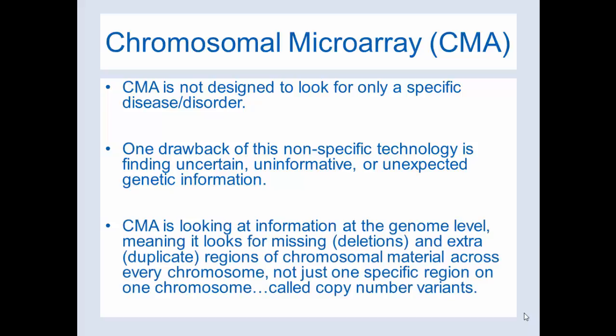CMA is looking at information at the genome level, meaning it looks for missing and extra regions of chromosomal material across every chromosome. We call those deletions, for when material is missing, or duplications, for when there are extra regions. CMA is not just looking at one specific region or one chromosome — it looks at all 23 pairs of chromosomes. The type of information CMA is looking for is called copy number variance.